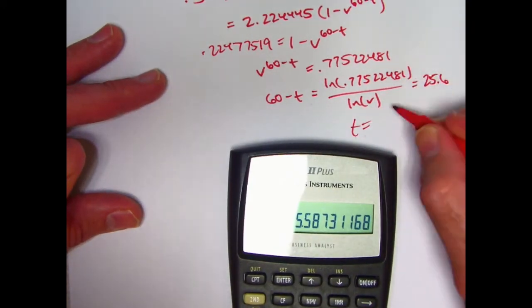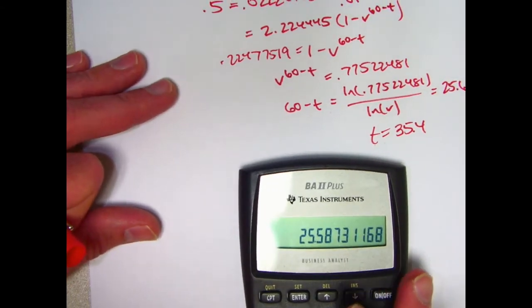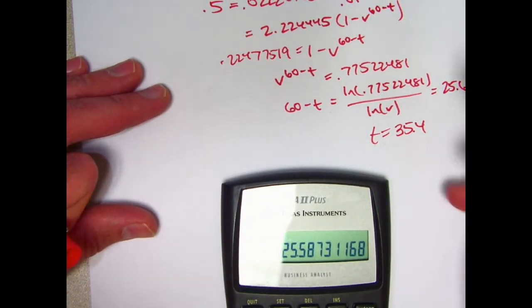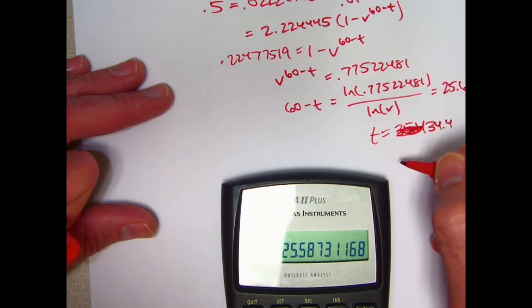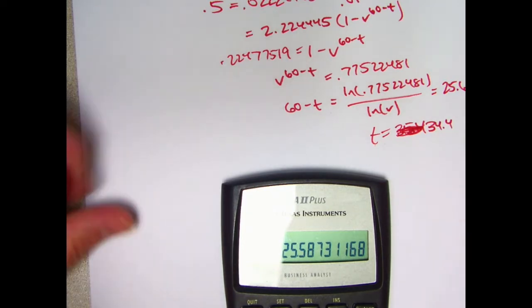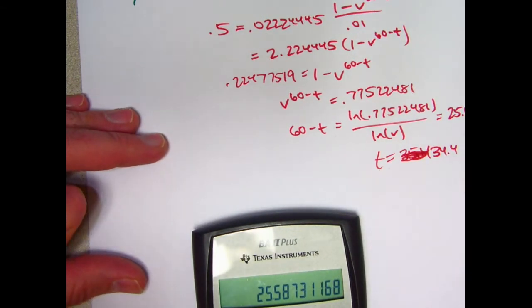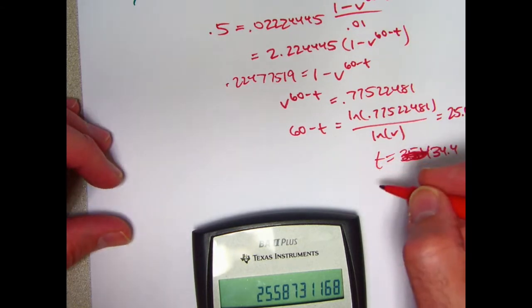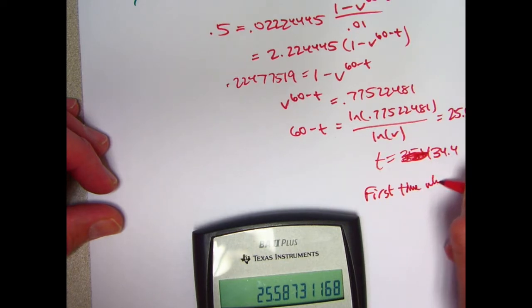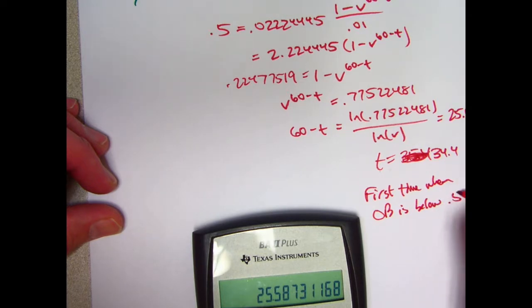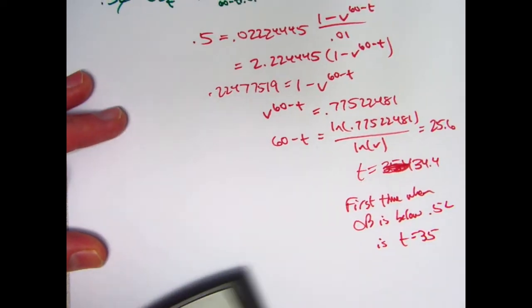So it looks like 60 minus T is about 25.6. Therefore, T itself is about 35.4. And therefore, oops, no mistake there, 34.4. And therefore, since payments are made at whole integer months, the first time when the balance is below 0.5L is T equals 35.